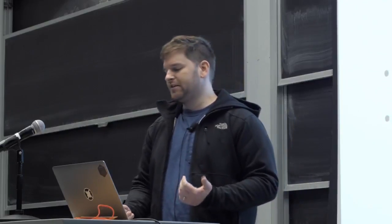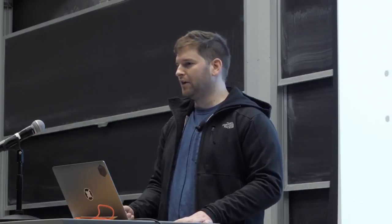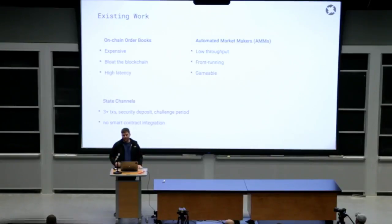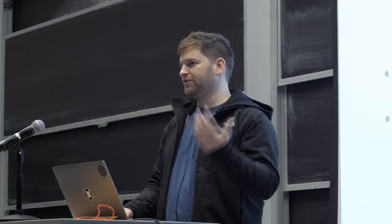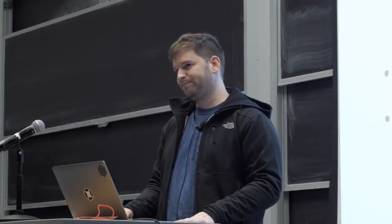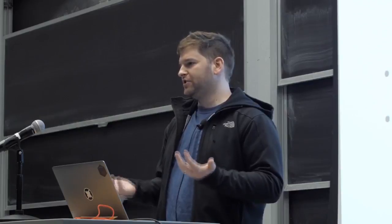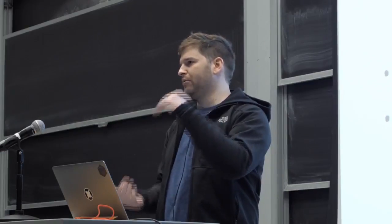The second class of decentralized exchanges that people were experimenting with early on are called automated market makers. Instead of two parties entering into a trade directly, a buyer or seller will trade directly with a smart contract. The smart contract offers a spot price that will be modified deterministically according to some sort of curve programmed into that smart contract, and the price adjusts according to market forces pushing the price up or down over time.